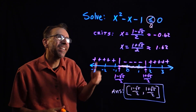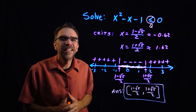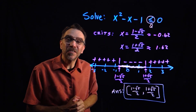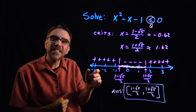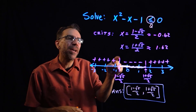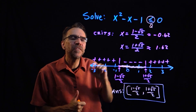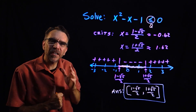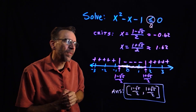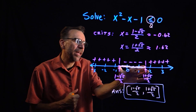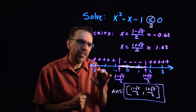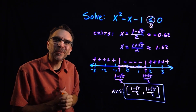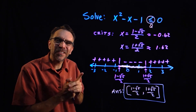So there are two quadratic inequalities solved using sign charts. They're really not so bad — the hard part is finding those critical numbers, the roots. But once you do that, you make the sign chart and then just answer the question.